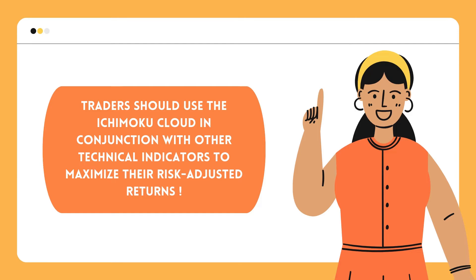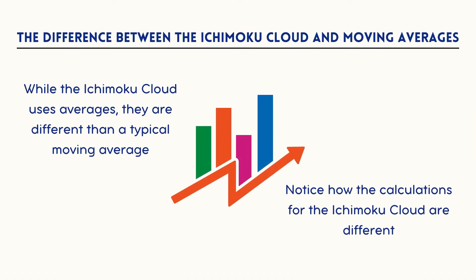The difference between the Ichimoku Cloud and moving averages: while the Ichimoku Cloud uses averages, they are different from the typical moving average. Simple moving averages take closing prices, add them up, and divide that total by how many closing prices there are. In a 10-period moving average, the closing prices for the last 10 periods are added, then divided by 10 to get the average. Notice how the calculations for the Ichimoku Cloud are different — they are based on highs and lows over a period and then divided by two. Therefore, Ichimoku averages will be different than traditional moving averages even if the same number of periods are used. One indicator is not better than another; they just provide information in different ways.